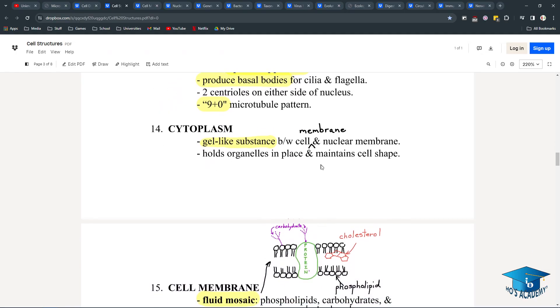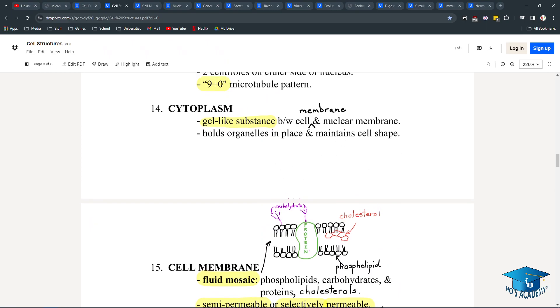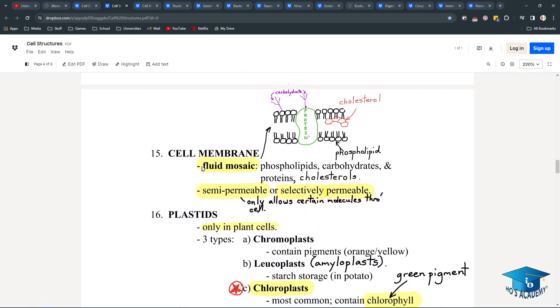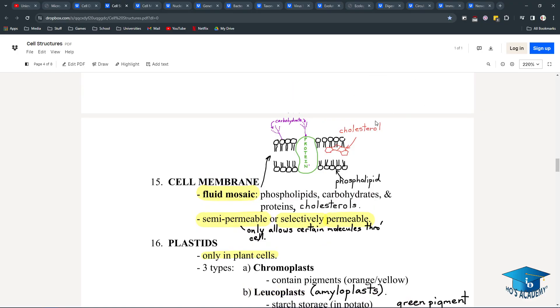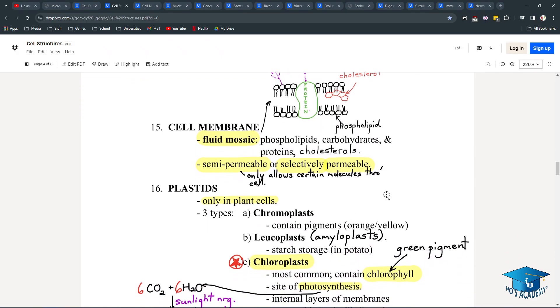Cytoplasm is the gel-like substance, mostly water within the cell. It helps hold the organelles, suspends them, and maintains cell shape. The cell membrane, we'll go more into depth about this fluid mosaic model. But there are four kinds of things in there: cholesterol, phospholipid, proteins, both integral and external ones, and carbohydrate markers. They're semi-permeable, meaning that only certain things can come in.